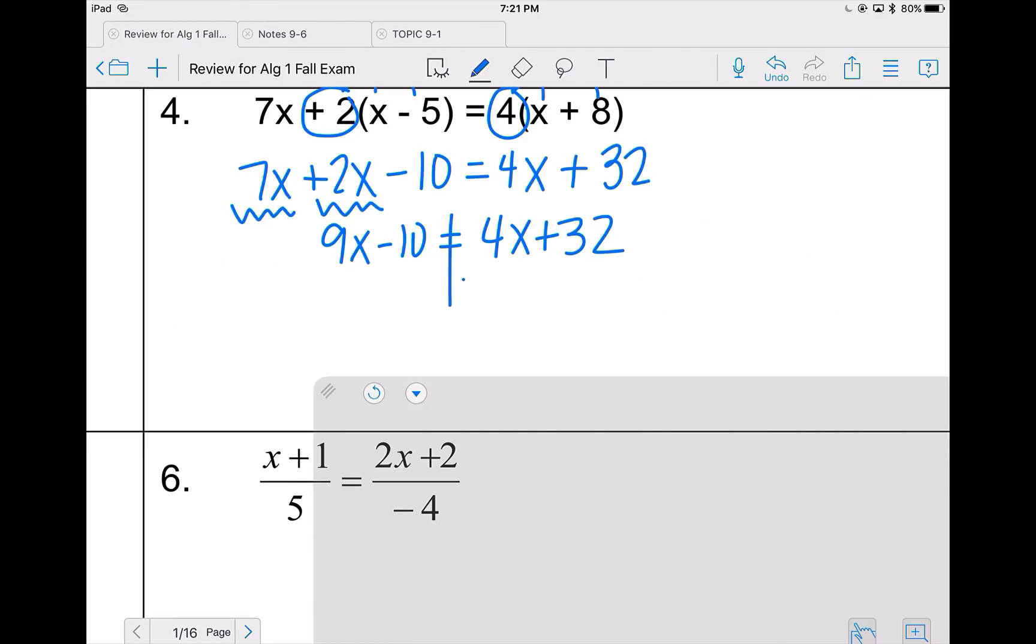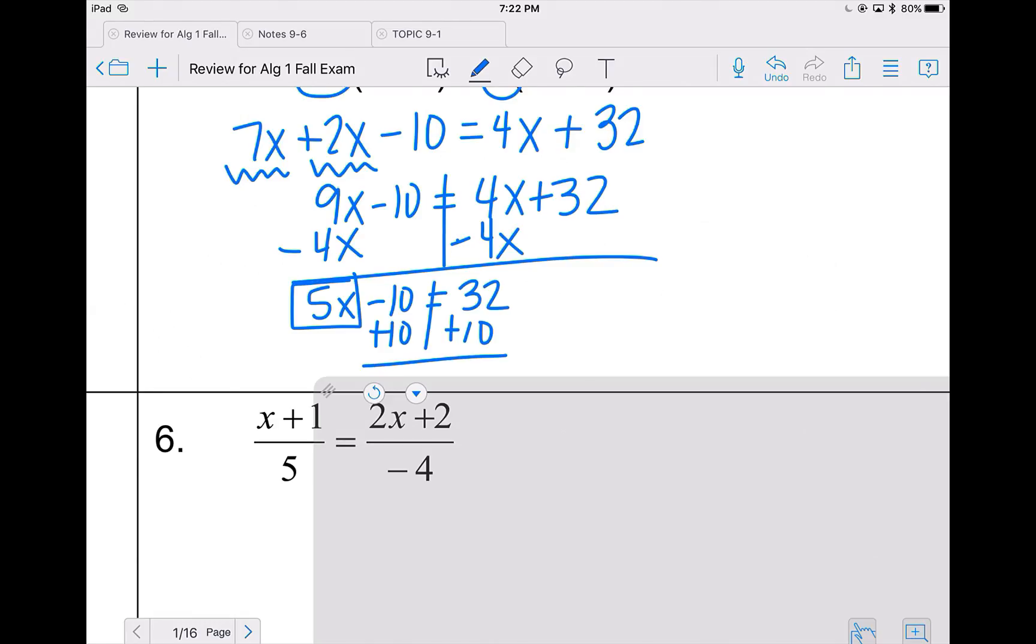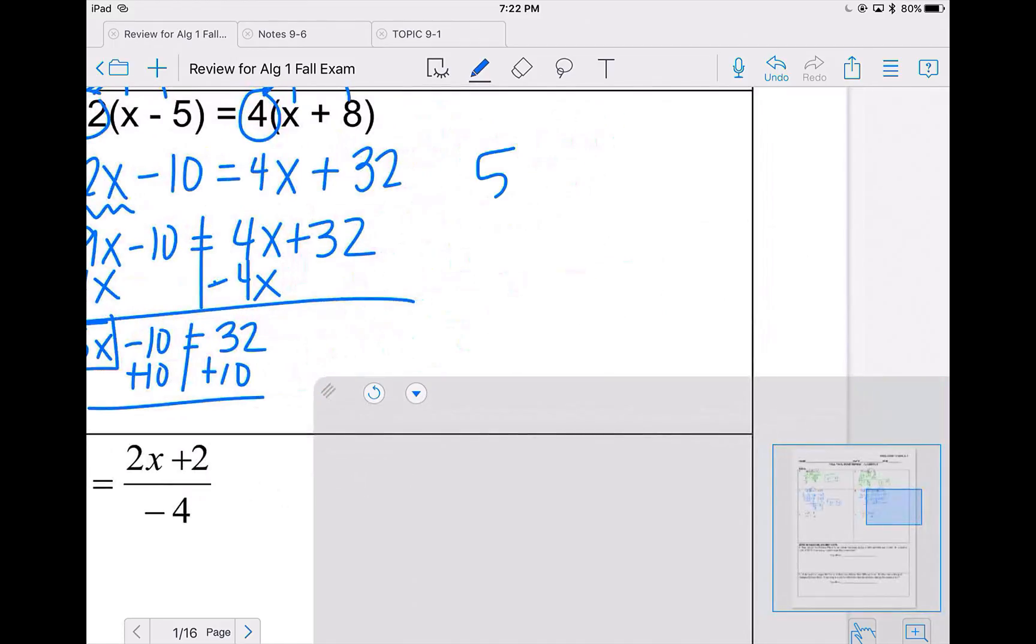From here, I'm going to put my x's on the same side. I am moving the 4x because it is the smaller of the x's. It doesn't matter as long as you put the x's together and use the opposite operation to move them. So 9 minus 4x is a total of 5x. I will then move the 10, so I have 5x equals 42. Divide by 5 on both sides and 42 divided by 5 is 8.4.